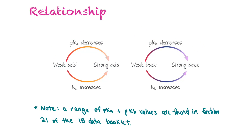To help understand the relationship between pKa and Ka, and pKb and Kb, consider that as Ka increases — going from a weak acid to a strong acid — pKa will decrease. This is very similar to pH: as acid strength increases, pH decreases. For weak bases, as pKb decreases, the base goes from weaker to stronger, and Kb increases. If you need a range of pKa and pKb values, they're found in section 21 of the IB data booklet and you would be referred to those values on an assessment.